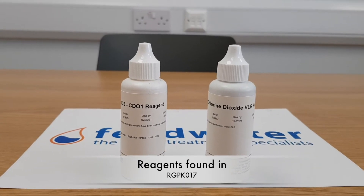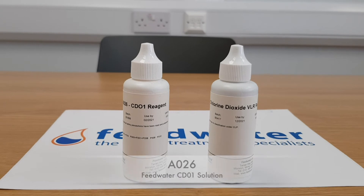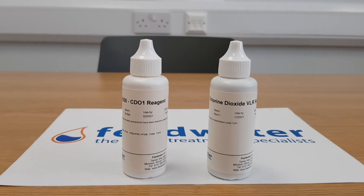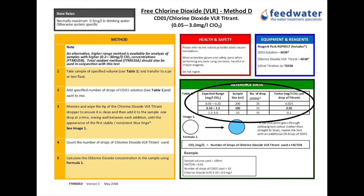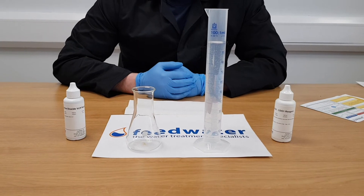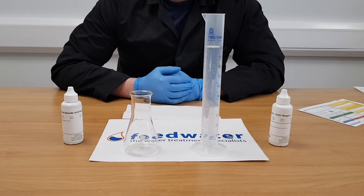For this test you will need the following reagents: Feedwater CDO1 solution and Feedwater chlorine dioxide BLR titrant. For most applications we expect the range to be 0.1 to 1.5 mg per litre of free chlorine dioxide, so we would recommend using a 100 ml sample volume. If you're expecting higher or lower results than this you may wish to opt for an alternative sample volume as shown. In this example we'll be using a 100 ml sample volume.